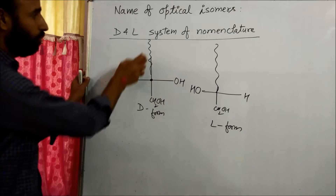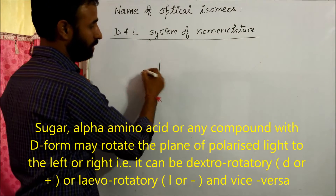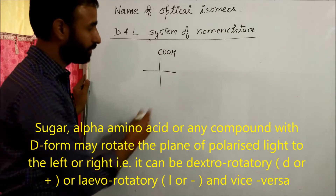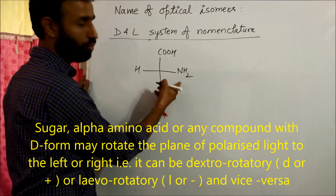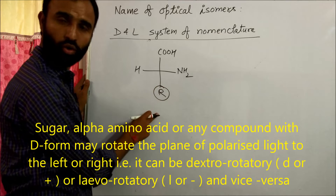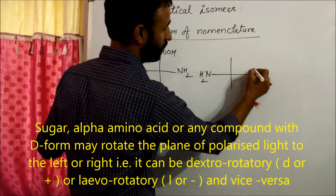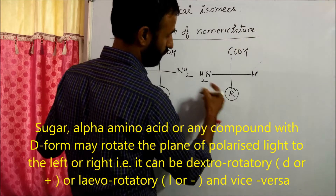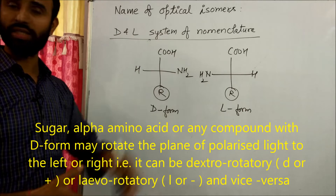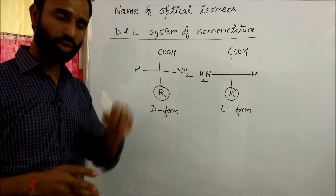The D/L system can also be applied to alpha amino acids. For alpha amino acids, one side has COOH and NH2. If NH2 is on the right side, it is called the D form. If NH2 is on the left side, that is called the L form.